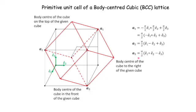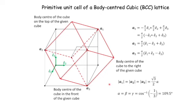The three vectors A1, A2, and A3 are all of equal length, equal to half the body diagonal of the original cube. The body diagonal is √3 times A, where A is the lattice parameter, so the edge length of the primitive cell is (√3/2)A. The interaxial angles α, β, and γ between A1–A2, A2–A3, and A1–A3 are all equal, and can be found by taking dot products. The result is cos⁻¹(−1/3), which is 109.5 degrees.